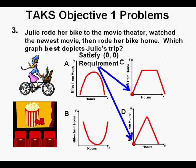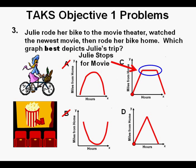There are only two graphs that satisfy having the point (0,0) as that basic requirement or starting point, so we can eliminate answer choices A and B. We also know that Julie watched the latest movie, so she had to stop for a while to watch the movie. And there's only one graph where she stops for any amount of time to do anything, and that's in graph C.